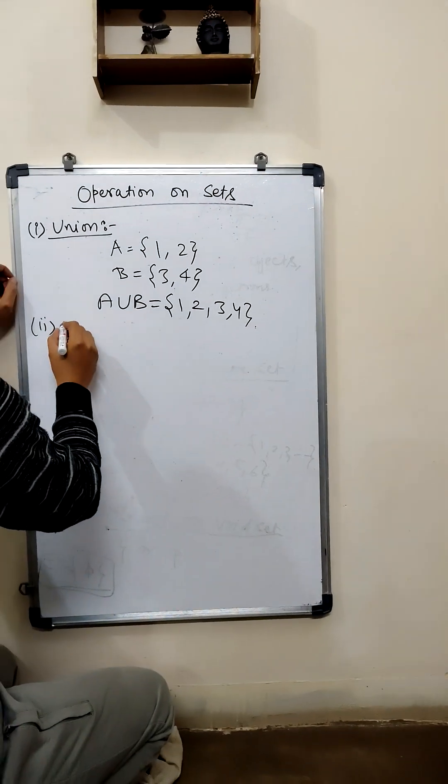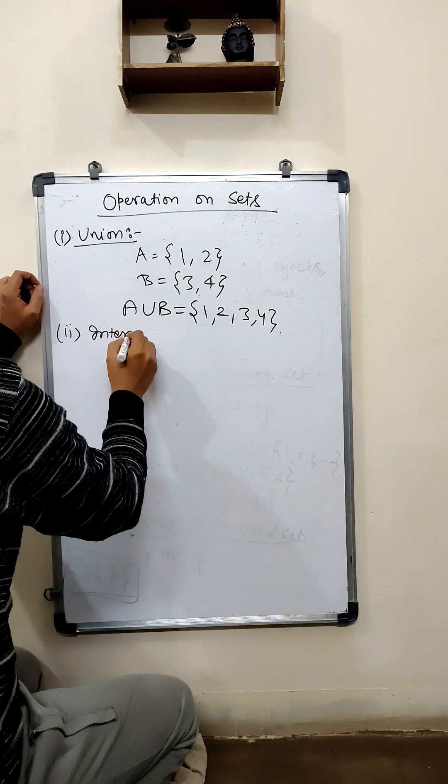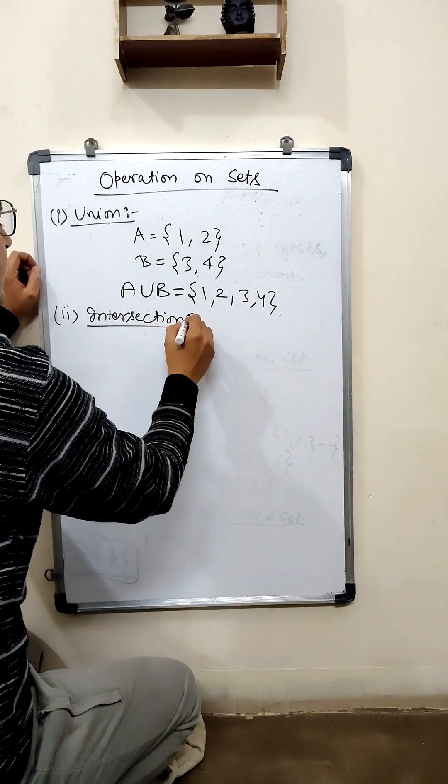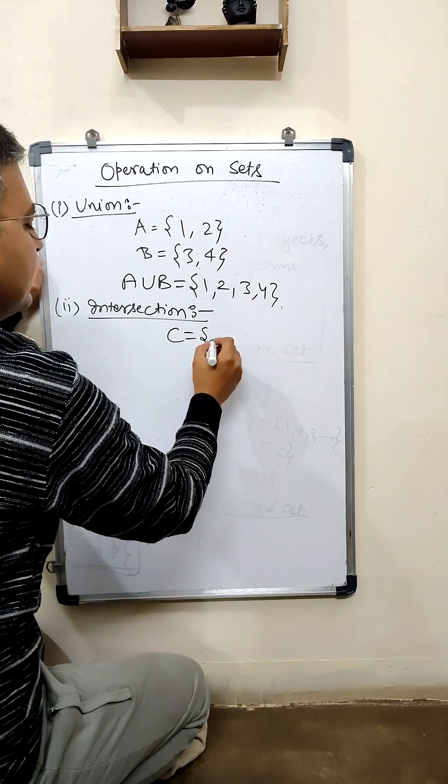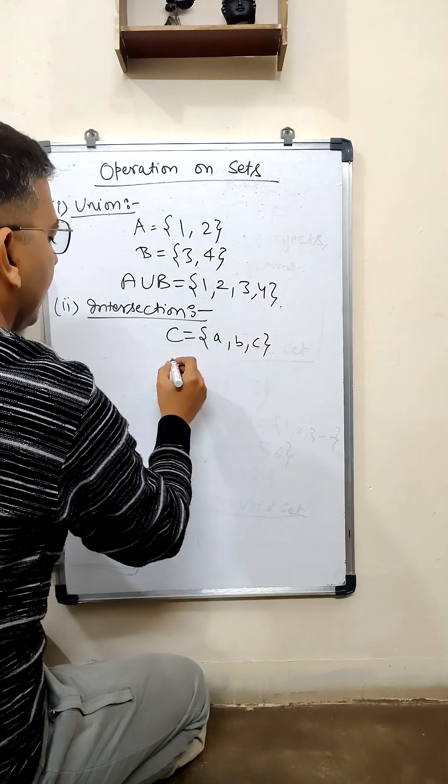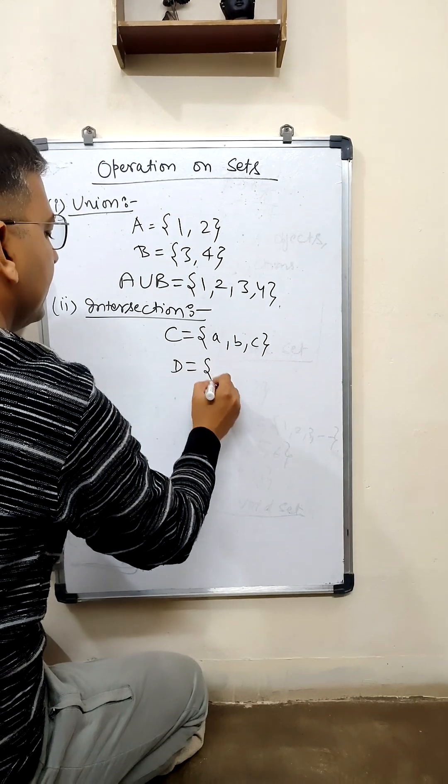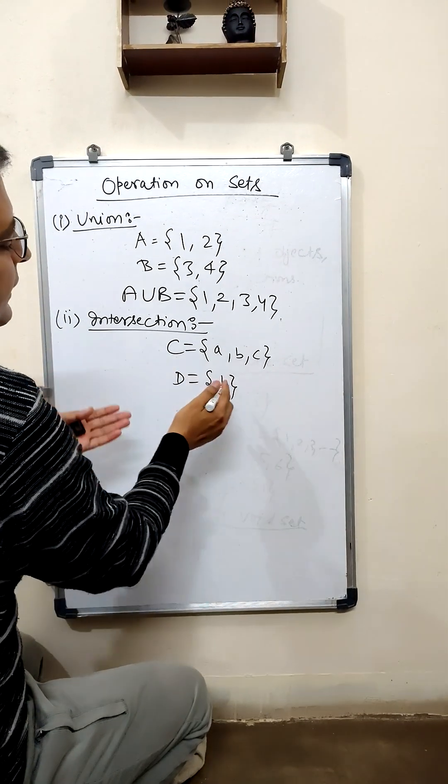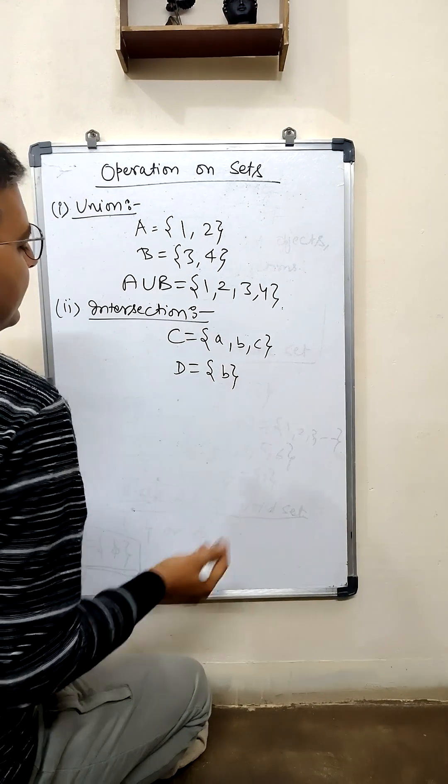Next operation is the intersection. For example, set C has elements a, b, c and set D has element b. We can see that b is the only element which is common in both sets.